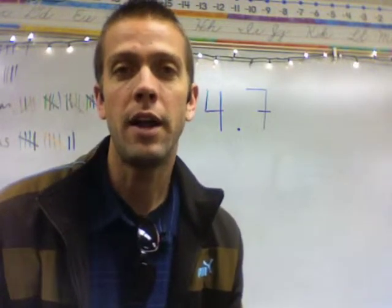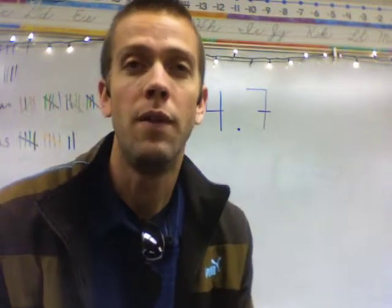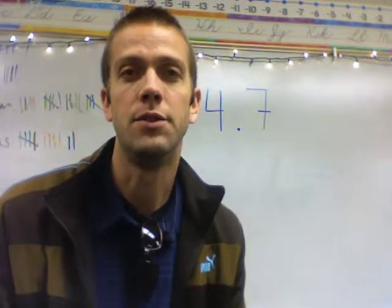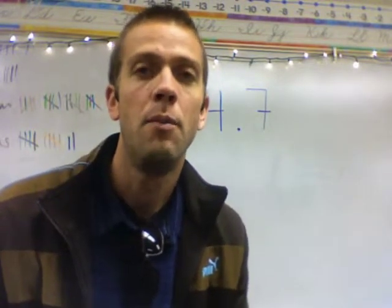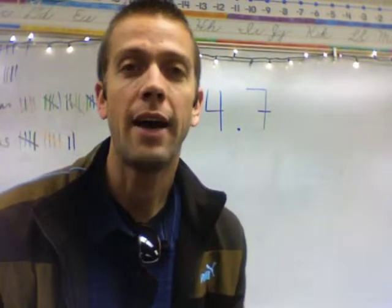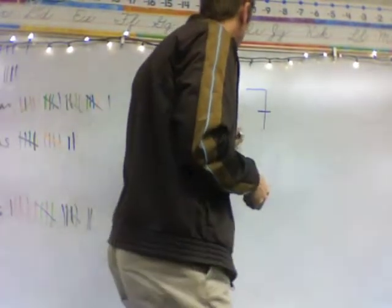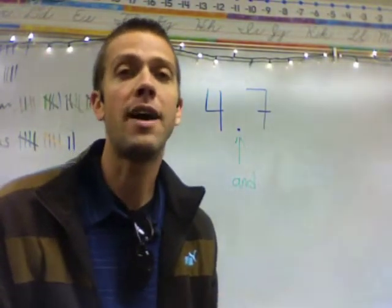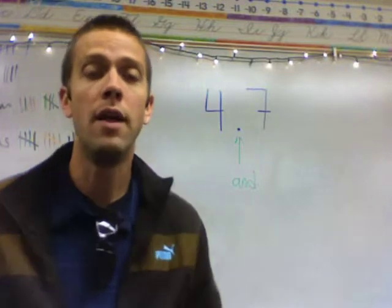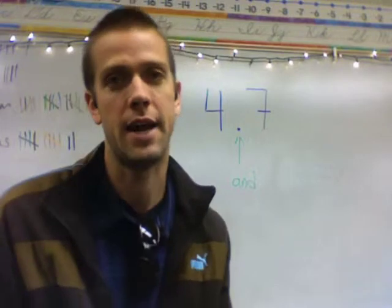Now remember, in a typical whole number you don't want to say the word 'and.' Like 1001 — there's no 'and' in that number, you just say one thousand and one. But when you have a decimal, that commands the word 'and.' So whenever you have a whole number separated by a part of a number — a fraction of a whole — you're going to use that decimal point and you're going to use the word 'and' when you read it out loud.